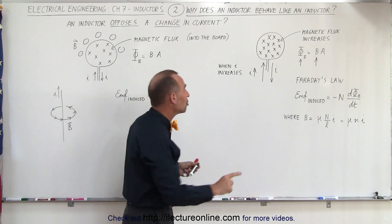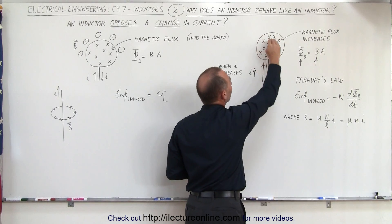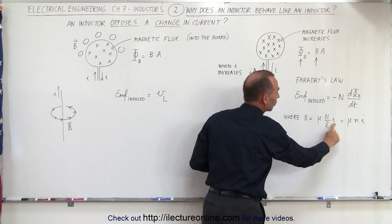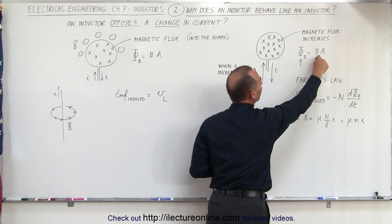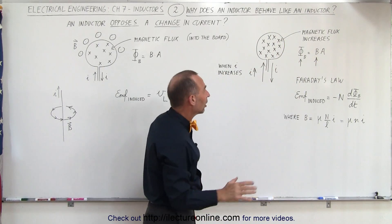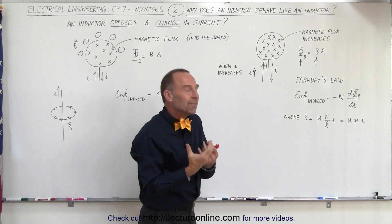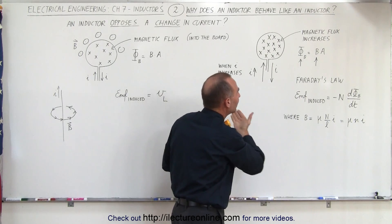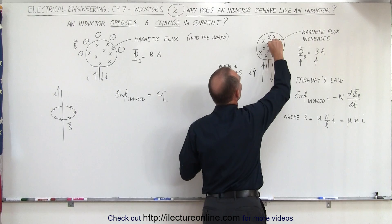What happens when you increase the current? When you increase the current, you increase the magnetic flux because you've increased the magnetic field. Increasing the current increases the magnetic field, which increases the flux through the loop. An inductor opposes that change by setting up an EMF — inducing an EMF that causes a current to flow in the opposite direction, which then causes a magnetic field in the opposite direction.